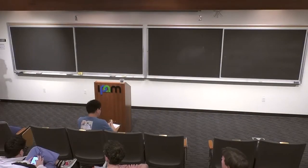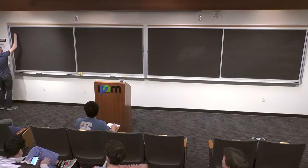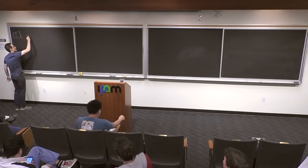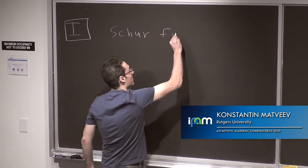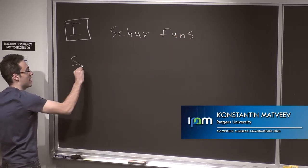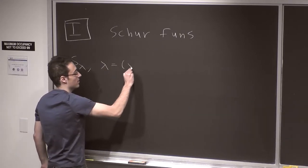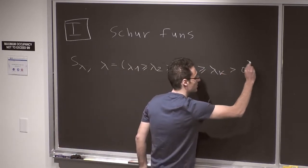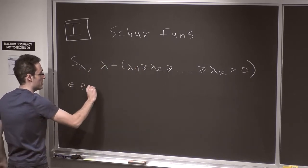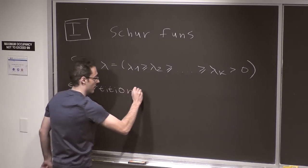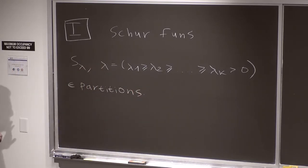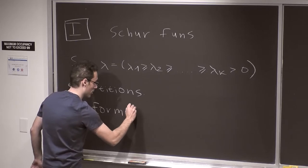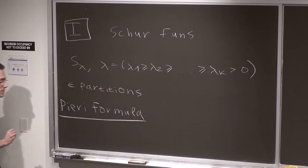My talk will have four parts. For the first part, I'll start with something familiar for everyone: Schur functions. Let's consider Schur functions S_lambda where lambda is a partition lambda_1 >= lambda_2 >= ... >= lambda_k > 0. One good starting point, even if it might not seem the most natural, is the Pieri formula for Schur functions.